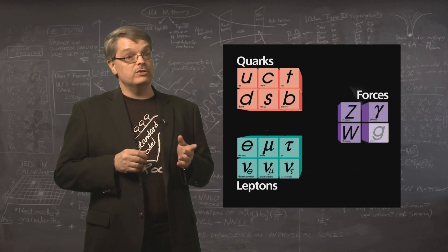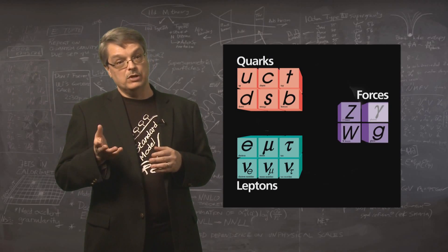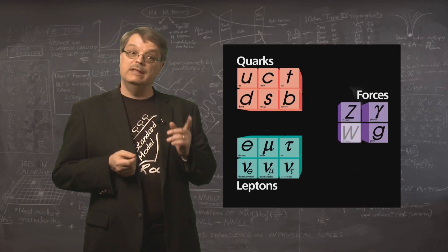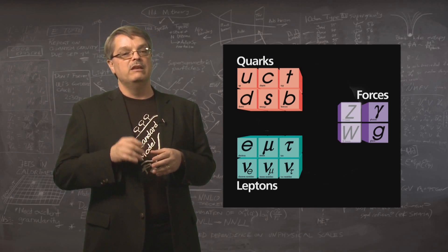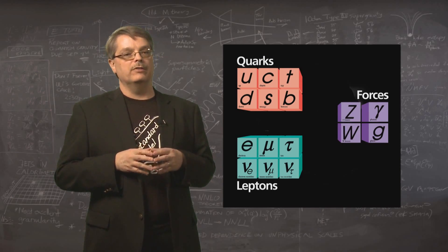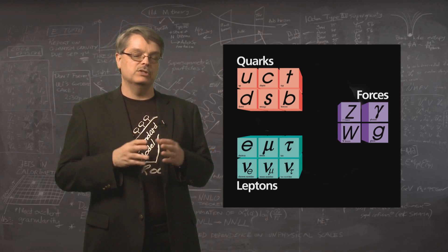The particles are the gluon for the strong nuclear force, the photon for the electromagnetic force, and the W and Z bosons for the weak nuclear force. Physicists speculate about a particle called the graviton for gravity, but this has not been demonstrated.